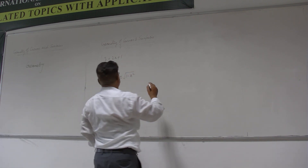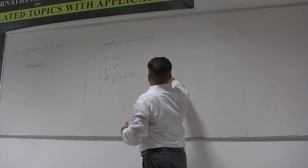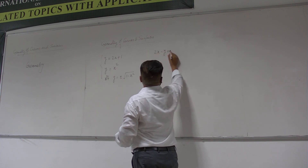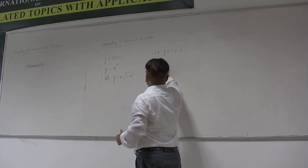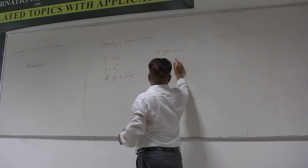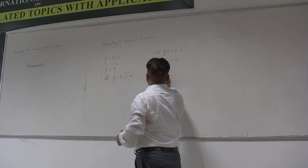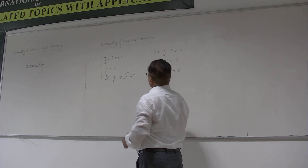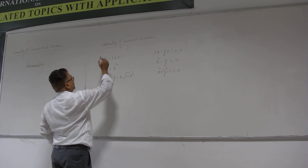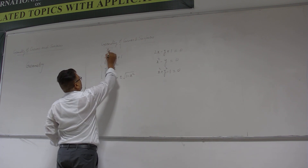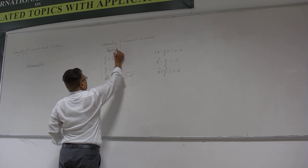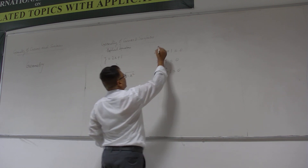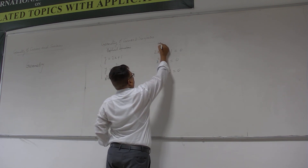Similarly, I can write down some implicit relation between x and y, like 2x - y + 1 = 0, or x² - y = 0, or x² + y² - 1 = 0. The first set of equations you can call explicit equations, and the second set of equations is the set of implicit equations.